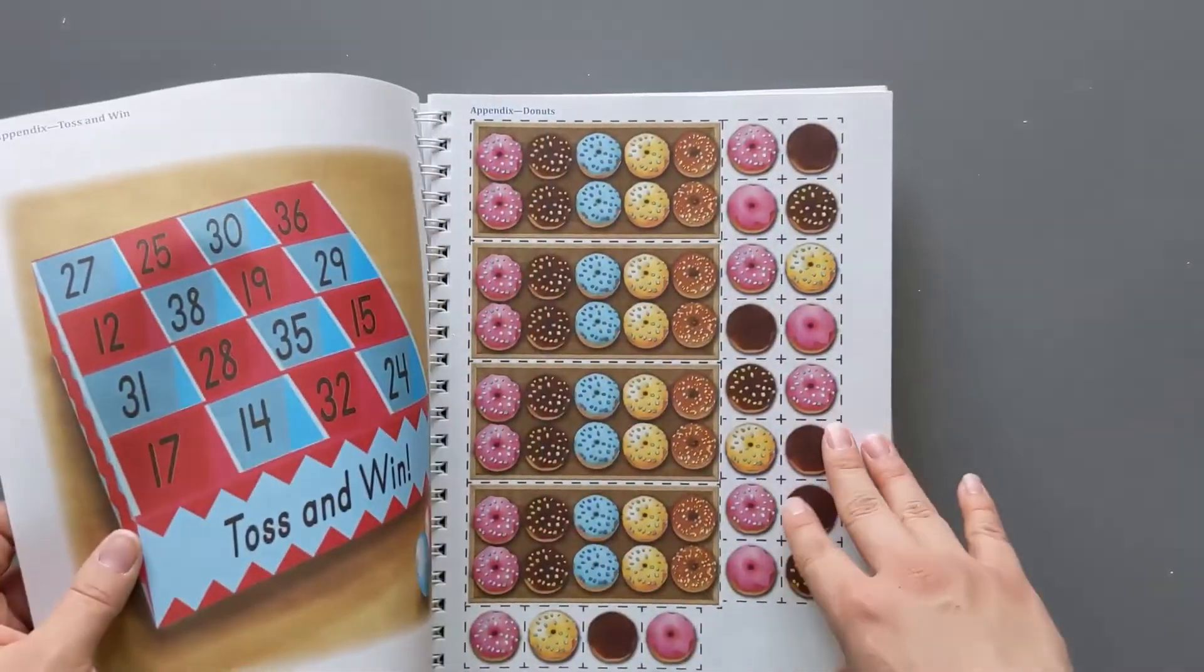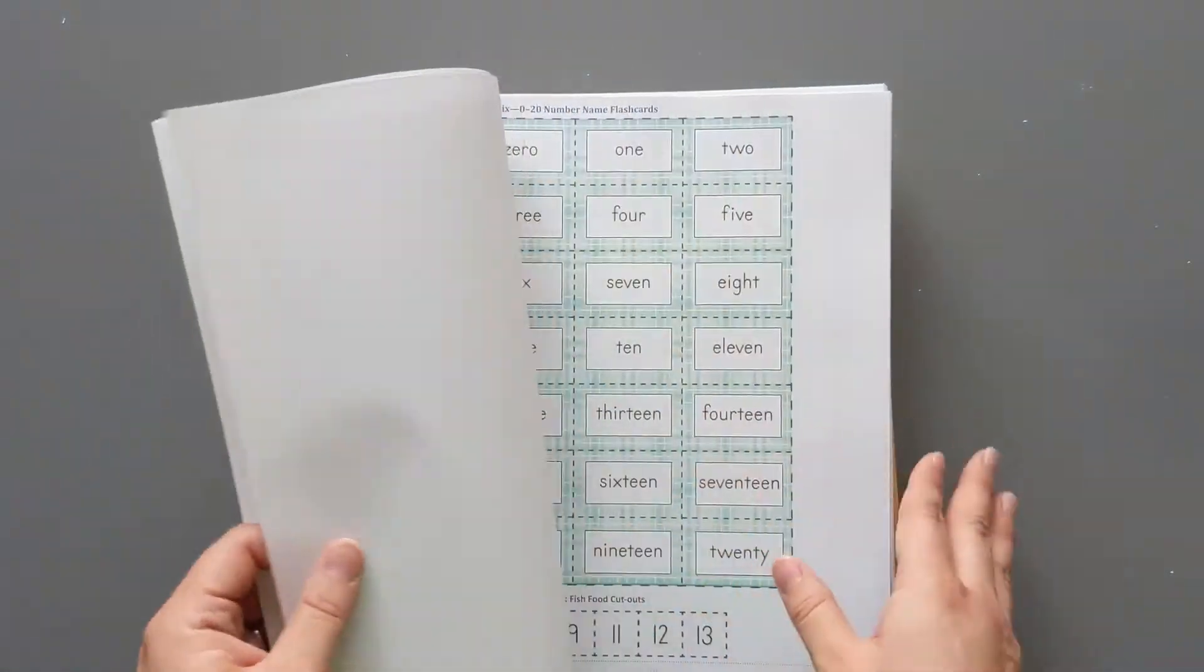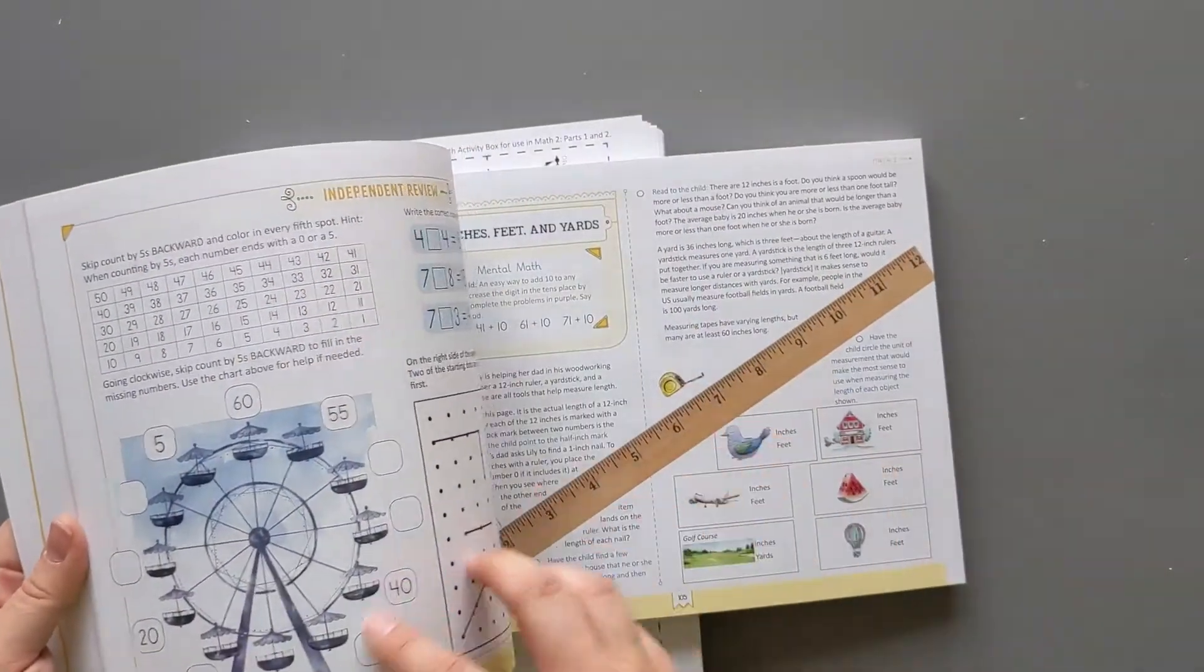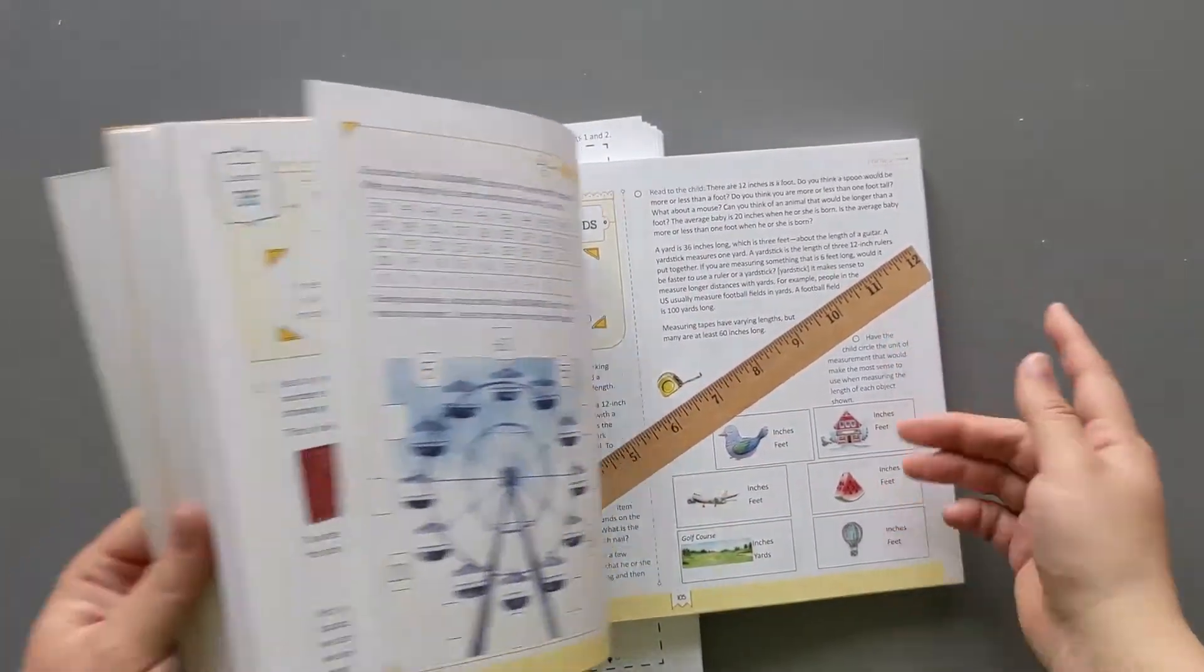There was just a lot of moving parts with the old one, which is fine. I didn't mind it but I did get overwhelmed. I'm excited that it is all right here. Here's a ruler you don't have to go cut it out from the back.